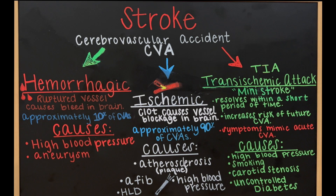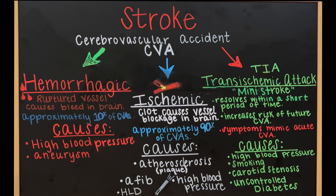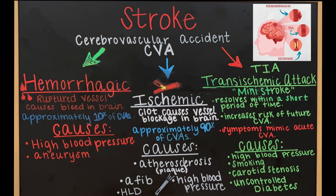The term stroke is also referred to as a cerebrovascular accident, or CVA. Depending on where you're at, you're going to hear both terms thrown around. Either way, both are broken down into three different categories: hemorrhagic, ischemic, and transient ischemic attacks — all different types of strokes.